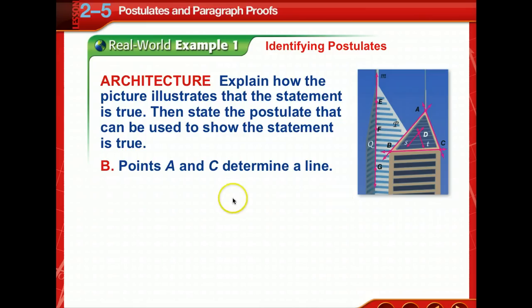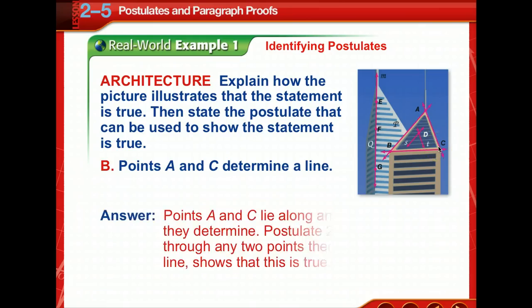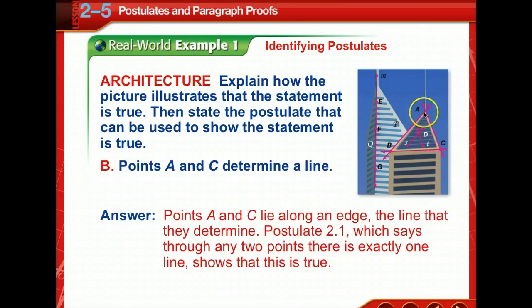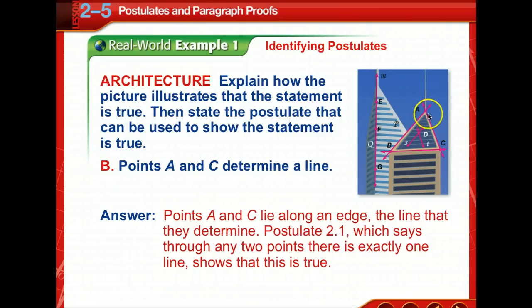We're to prove that points A and C determine a line. We've got two points, A and C, and they lie along an edge. So postulate 2-1, which says through any two points there is exactly one line, shows this is true. Only one line contains both A and C.